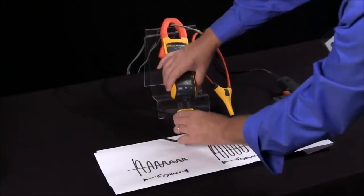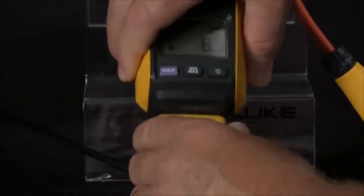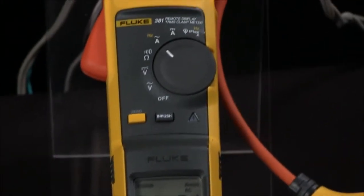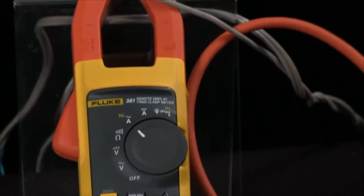Now what's nice about this is this feature also works with the iFlex clamp. So if you're in a very tight spot, these iFlex clamps let you get into tight wires and junction boxes.